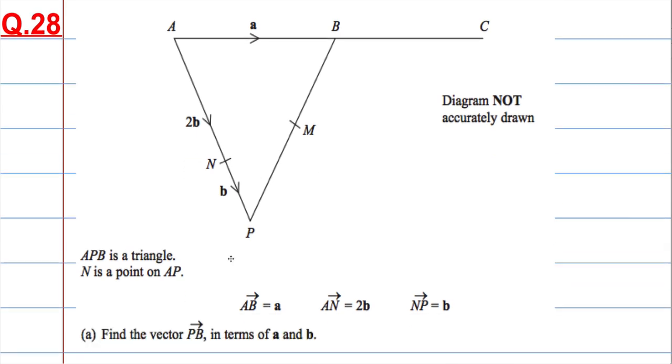So we got APB as a triangle, APB, and N is a point on AP, and we got three vectors given, and we're asked to find the vector PB in terms of a. So we want this vector here, we want this vector, PB, in terms of a and b.